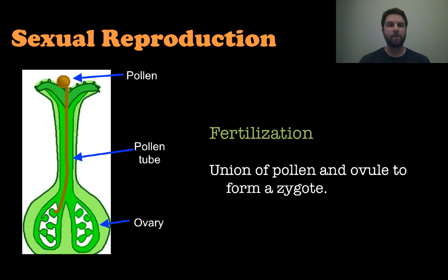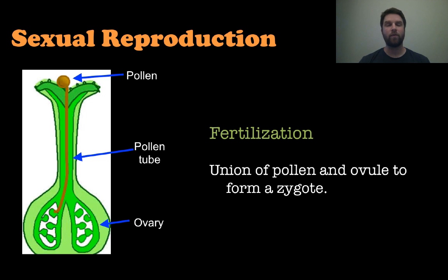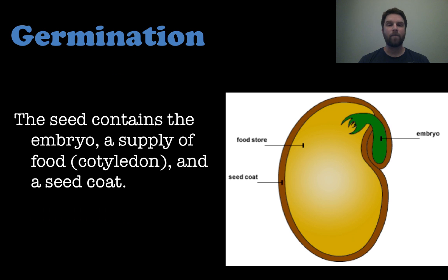Once pollination occurs, fertilization follows. The pollen gets trapped in a sticky substance on top of the stigma, then grows a pollen tube that leads it down the pistil and into the ovary. That is fertilization — the union of the pollen and the ovule to form the zygote.